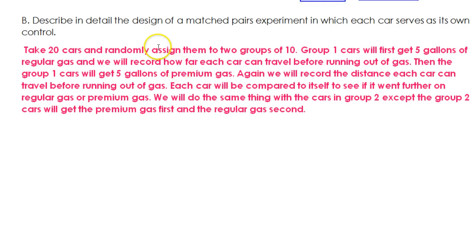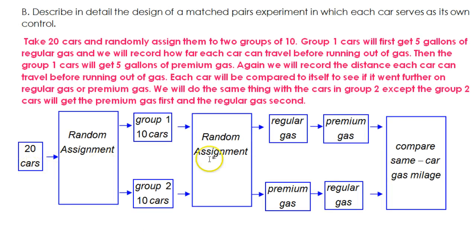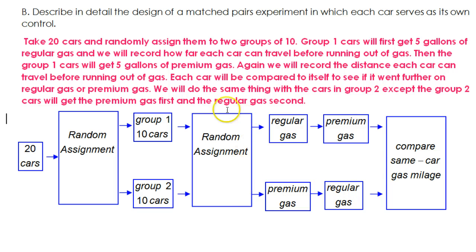Let's do a matched pairs diagram so you can remember what that looks like. You take your twenty cars, randomly assign them to two groups, then randomly assign those groups to the different series of treatments. One group gets regular gas then premium gas, and the other group gets premium gas then regular gas. There's a random assignment here — we're not saying group one automatically gets one series or the other. It's random. Then we compare same-car gas mileage — each car gets compared with itself.